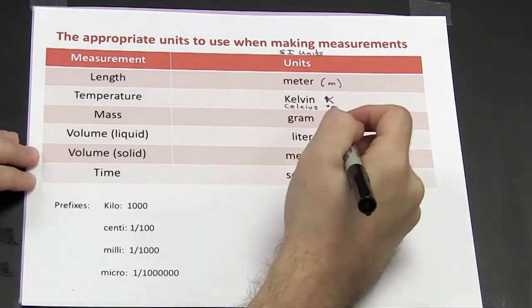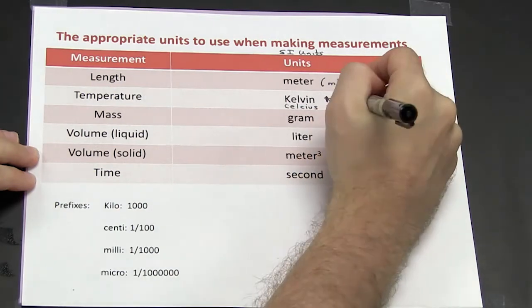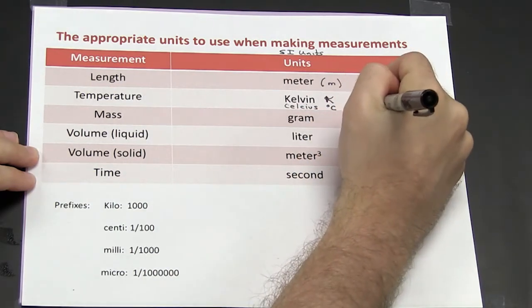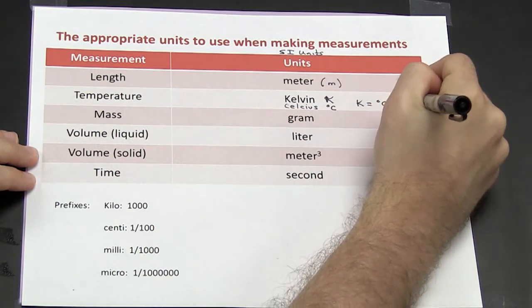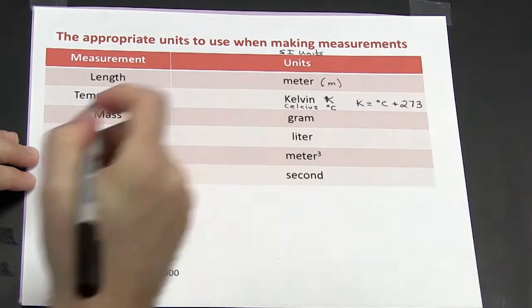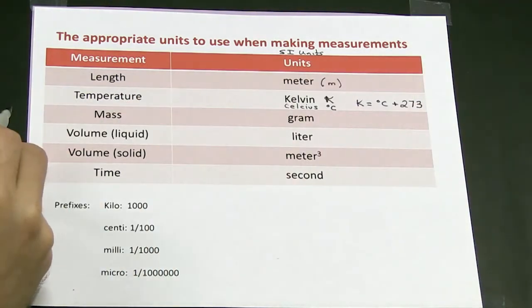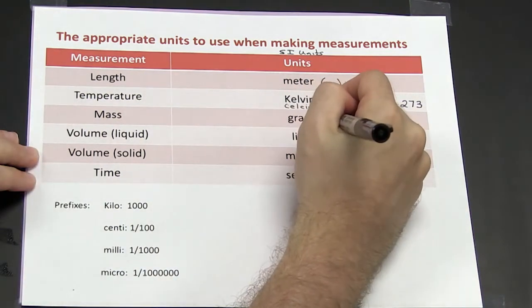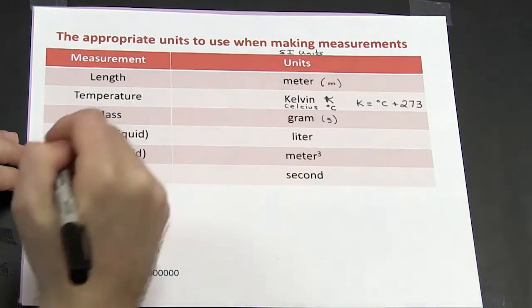The conversion between Kelvin and Celsius: Kelvin is equal to degrees Celsius plus 273. Mass is reported in grams and the symbol for grams is a little g.